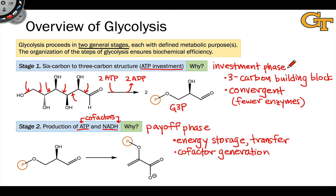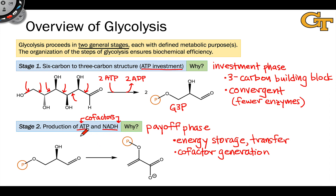To summarize: in stage one, we have the investment phase, where glucose is broken into two three-carbon fragments, each processed identically — a convergent, highly efficient approach. In stage two, we get the energetic outputs of glycolysis with the production of energy-rich ATP and NADH molecules that appear in a variety of different metabolic reactions to power biochemical processes.